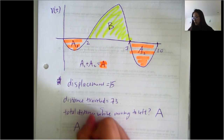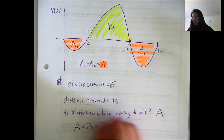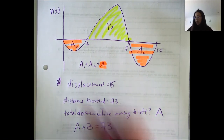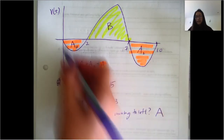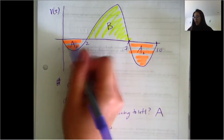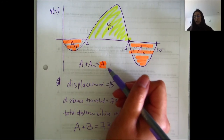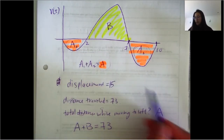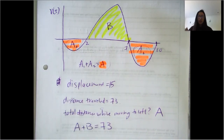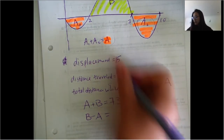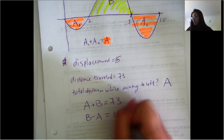So A plus B should be the total distance traveled, meaning A plus B equals 73. And displacement is where the A area counts as negative, so B minus A equals displacement, which is 15.